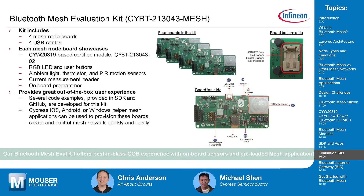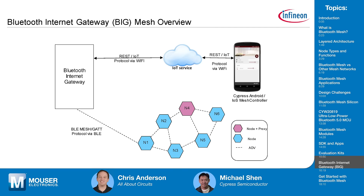The evaluation kit includes four boards based on the 20819. Each board has a PIR motion sensor, an RGB LED, and many headers for connecting additional sensor devices. This is a complete eval kit to start your Bluetooth mesh evaluation.